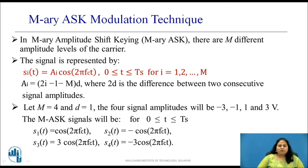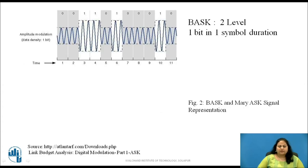Thus the four symbols of M-Ary ASK signals will be: S1(t) equals cos(2πfct), S2(t) equals minus cos(2πfct), S3(t) equals 3cos(2πfct), and S4(t) equals minus 3cos(2πfct). The figure shows the BASK signal representation, where one bit is transmitted in one symbol duration and is represented by two amplitude levels of the carrier.